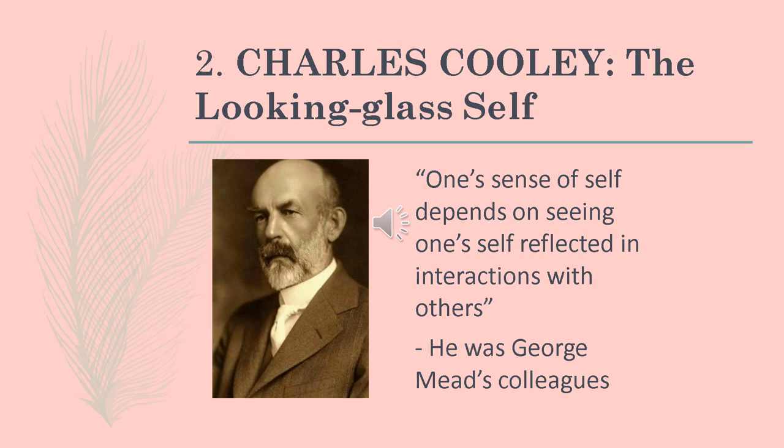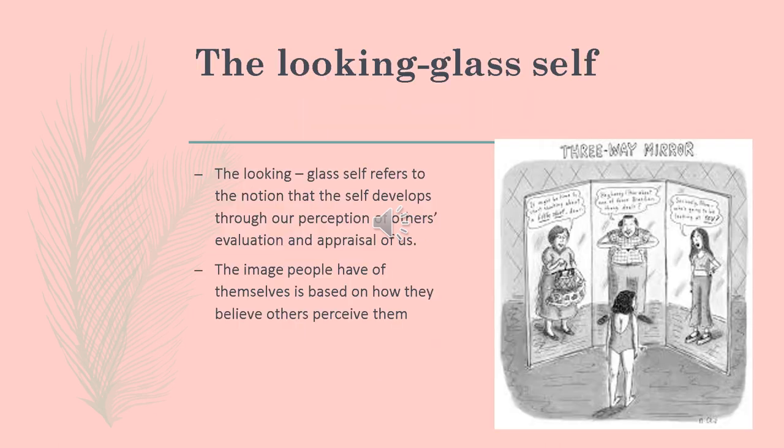We have here the Looking Glass Self theory by Charles Cooley. According to him, one's sense of self depends on seeing oneself reflected in interactions with others. Charles Cooley had a similar idea to George Mead because they were once colleagues. The Looking Glass Self refers to the notion that the self develops through our perception of others' evaluation and their presentation of us.